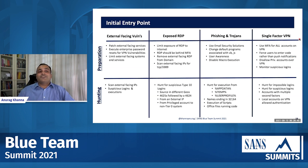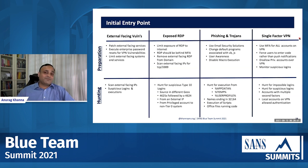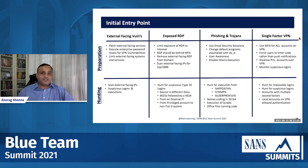For phishing and trojans, there are a lot of things we can do. User awareness is one. We can change the default programs associated with VB and JS files. Email security solutions can do a good job of filtering out some of these attacks. And for single-factor VPN: ensure you have multi-factor authentication on any VPN accessible from the internet and for all user accounts which can use that VPN. MFA is the cost of doing business on the internet — if you do not have MFA on an external facing service, you are just waiting to get exploited.